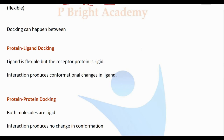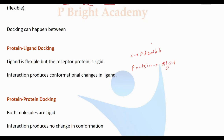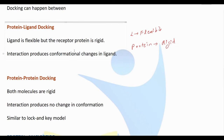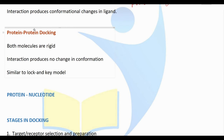In rigid docking, the ligand and the target are both tightly bound — they are not flexible. Docking can happen between different types: protein-ligand docking, where it can happen between a protein and a ligand molecule such as a receptor or enzyme. In flex-ligand docking, the drug molecule is flexible but the receptor — the protein — will be rigid. The target molecule is considered to be rigid in the pocket or active site. In protein-protein docking, both molecules are considered to be rigid.